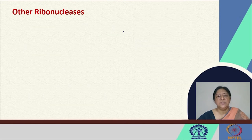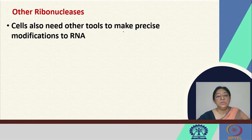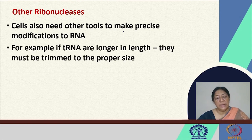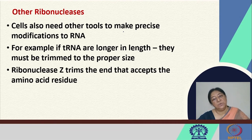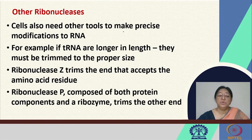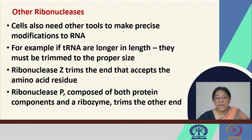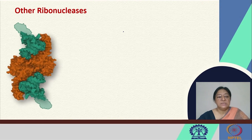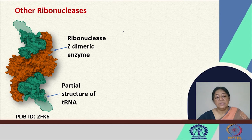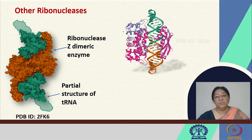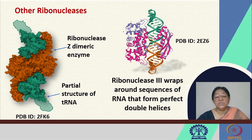There are other ribonucleases, each with a regulatory role. Cells need tools to make precise modifications to RNA. For example, if a tRNA is too long, it must be trimmed to the proper size. Ribonuclease Z trims the end that accepts amino acid residues, and Ribonuclease P — composed of both protein components and a ribozyme — trims the other end. Ribonuclease 3 wraps around sequences of RNA that form perfect double helices in a compact structure.